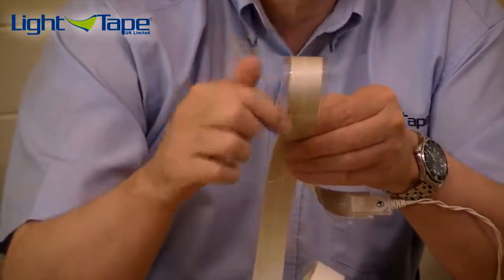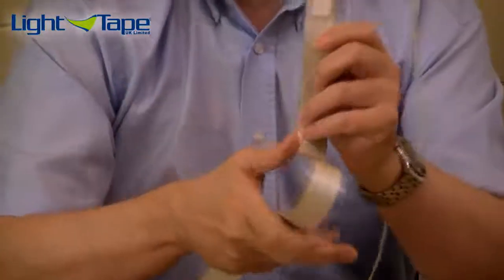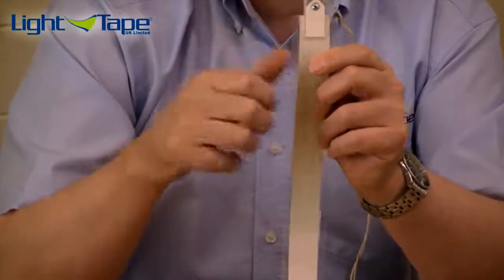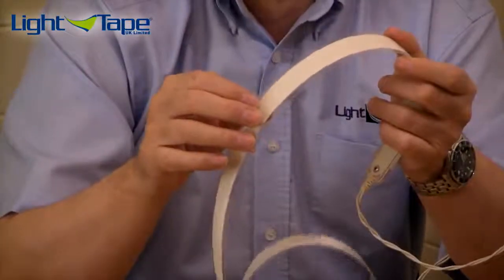This is because light tape uses what's called split electrode technology. So, effectively, what we're doing is we're putting a current to either side of this score line which is actually charging and vibrating the phosphors. When the phosphors vibrate, that's what creates the light.